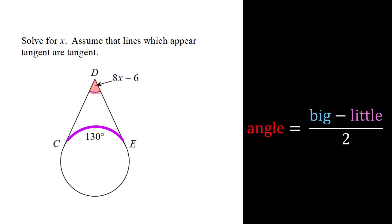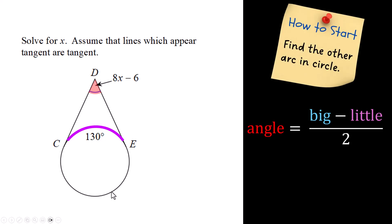Now according to that formula, there's two arcs here. Now I look at this picture, I don't see two arcs. But wait a minute, there is another arc. It's right here, and we have to start by finding that other arc. And you can do that by taking 130 degrees away from a total circle, which is 360.